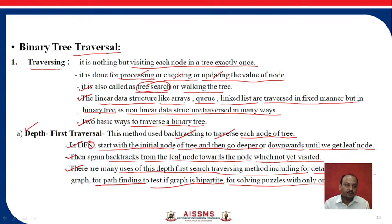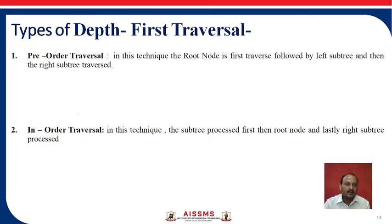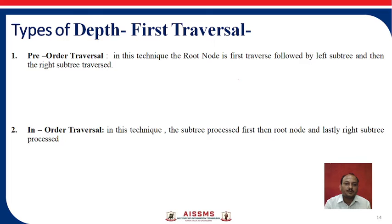In depth first traversal, there are three ways to travel. There are three types: first is pre-order traversal, then in-order traversal, and third is post-order traversal. We will now see what is meant by pre-order traversing.